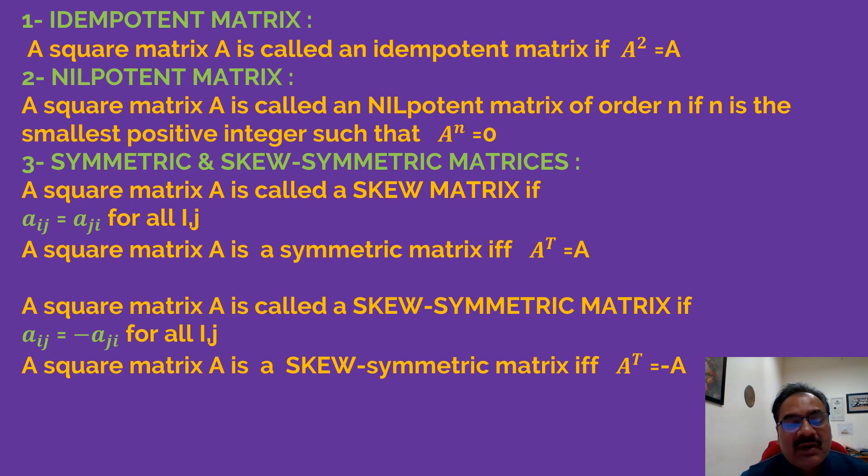And what is the symmetric and skew-symmetric matrices? This is also very important matrices and we always during the numerical computation we have to remember the definition of symmetric and skew-symmetric matrices. A square matrix A is called a symmetric matrix if a_ij = a_ji for every i and j.